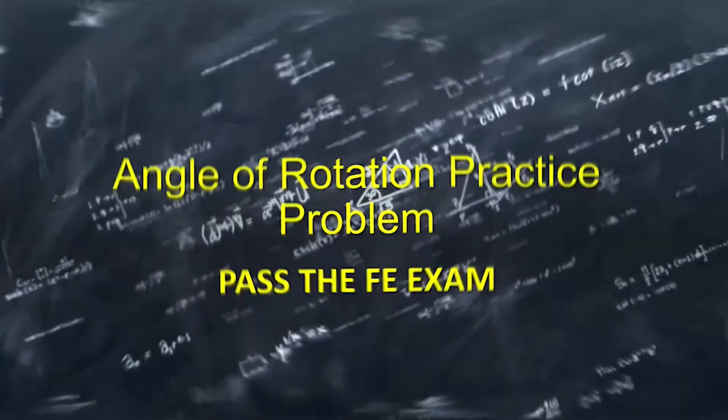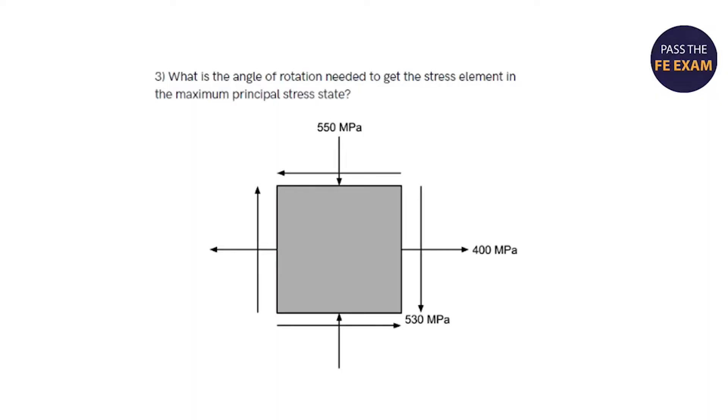So here's the problem. What is the angle of rotation needed to get the stress element in the maximum principal stress state? You should refer to the Mohr's circle section in the mechanics of materials chapter of the FE reference handbook for this problem, which in the latest book should be on page 133.